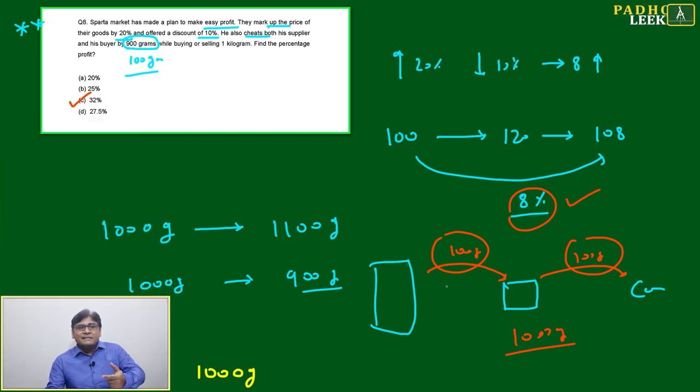The answer will be a little more than 28%, cannot be less than 28%, because in purchasing and selling we've taken roughly 1000 grams, but the bases will change - if you're selling the base is different, if you're purchasing the base is different. So it won't be exactly 20%, it will be more than 28%. Only one choice is there: 32%. You can mark the answer with 100% confidence.